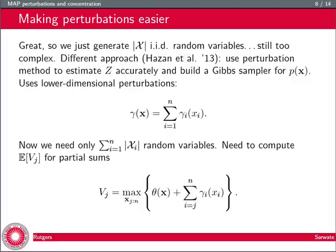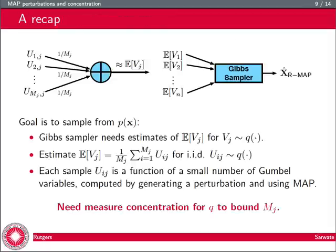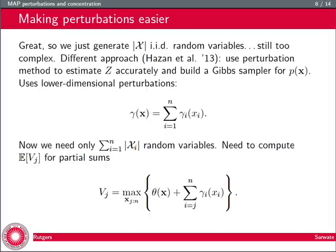The key to this sampling procedure is to compute the expected value of a random variable vj, a truncated version of the perturbed MAP solver. I take theta of x plus perturbation but maximize only over coordinates from j to n when computing vj. I can use a fast MAP solver as a black box for this subproblem, but I need to compute the expectation of vj. To recap: the goal is to sample from p of x by perturbing theta of x. The Gibbs sampler needs estimates of the expected value of vj.